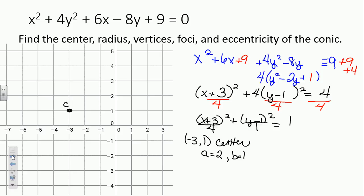Is this a vertical or a horizontal ellipse? The a squared is bigger under the x term, so it's a horizontal ellipse. We're going to move 2 to the right and 2 to the left from our center, giving a major axis of length 4. We'll move 1 up and 1 down for a minor axis of 2. Then we try to draw something that remotely looks like an ellipse — relatively football shaped.